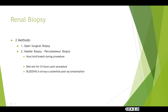A renal biopsy — or kidney biopsy — is performed to definitively determine if a person has cancer by viewing small tissue pieces under a microscope. It can also help stage cancer. A person can have an open surgical biopsy or a needle biopsy.